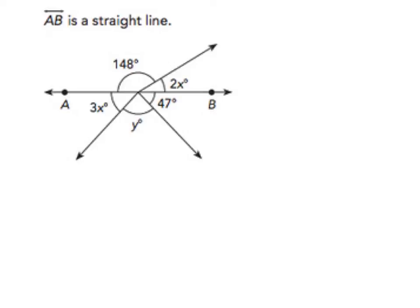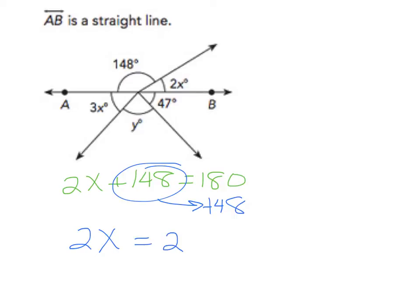To do that, I'm going to say 2x plus 148 equals 180. From here, we're going to take the 148 to the other side and turn it negative. 2x comes down, so 180 minus 148 is 32. Now from here we will divide both sides by 2, and x is going to equal 16.